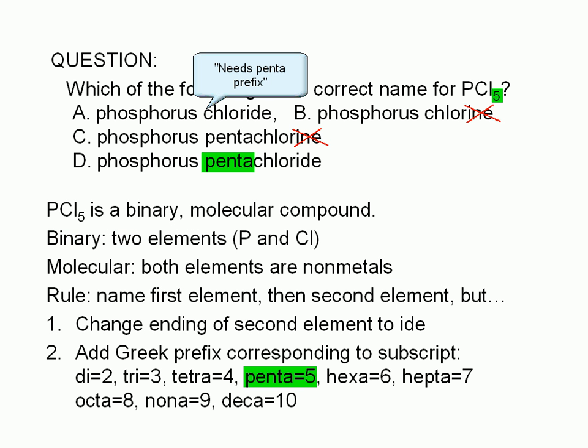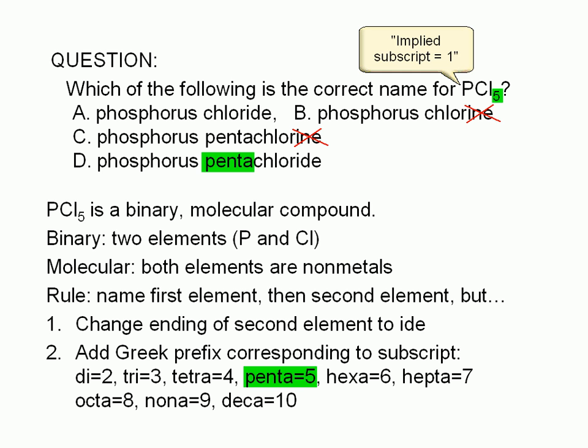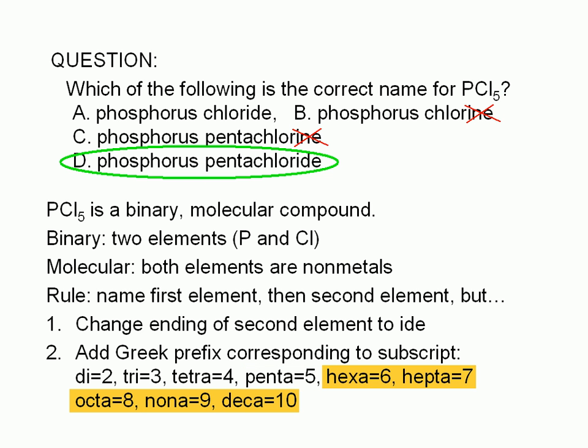No prefix is added if the subscript is 1, which is the case here for phosphorus. If there is no subscript next to the symbol for an element, it is implied to be 1. Other Greek prefixes you should memorize are hexa for 6, hepta for 7, octa for 8, nona for 9, and deka for 10.